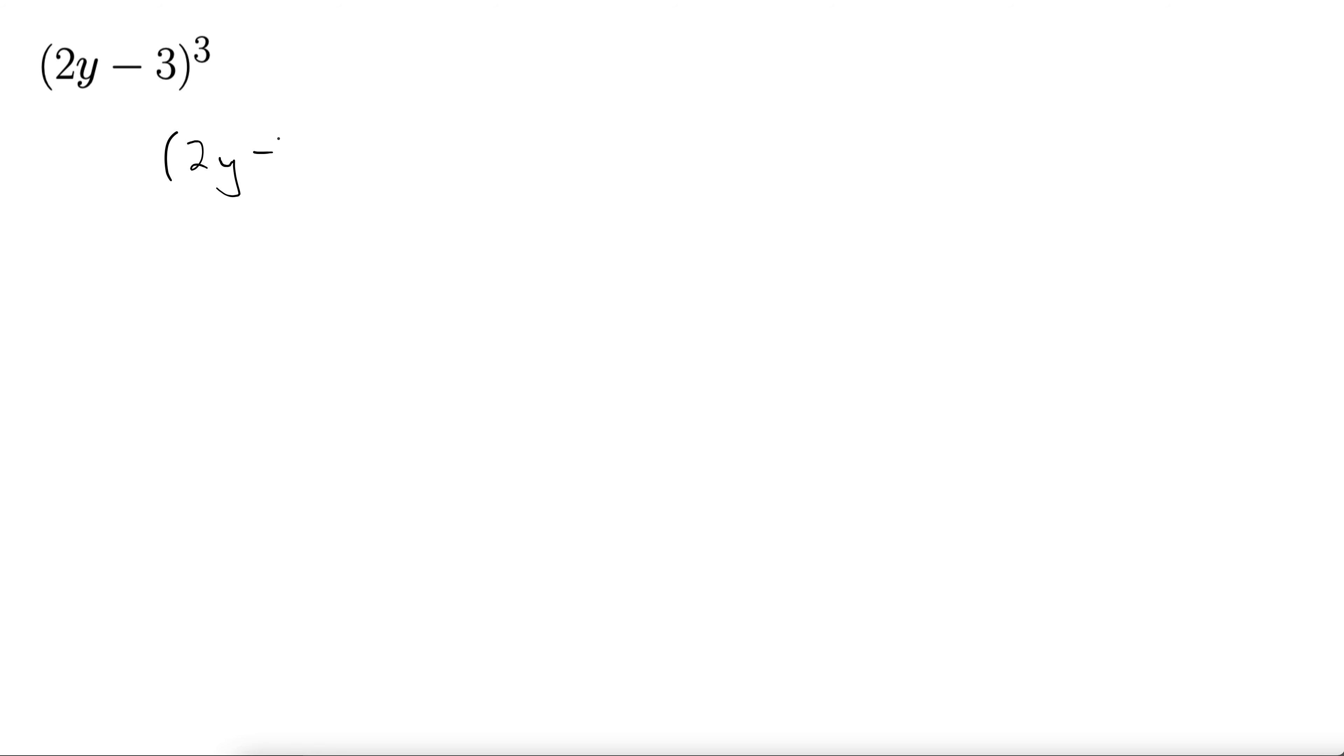We have 2y minus 3 times 2y minus 3 times 2y minus 3. That's what cubed means, right? We just multiply it by itself 3 times over. And what I'm going to do here is I'm going to take these last two terms and foil these together.